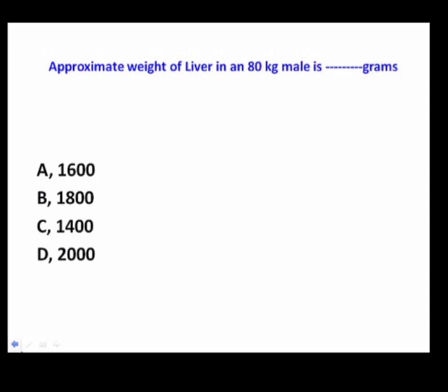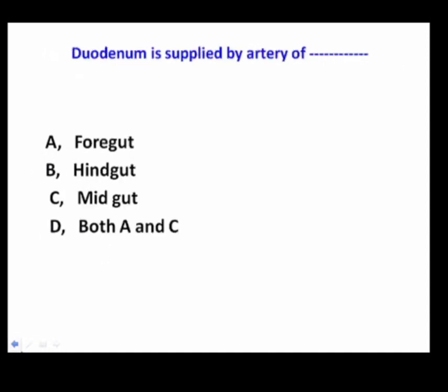Approximate weight of liver in an 80 kg male is how many grams? The correct option is 2000 grams. The weight of the liver in an adult is about 2.5% of body weight, so in an adult of 80 kg, the weight of liver is 2000 grams.